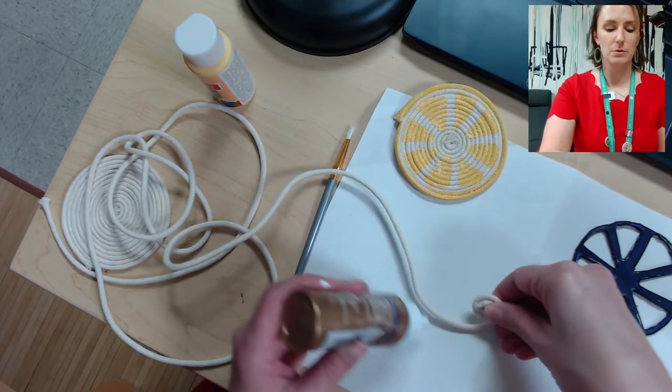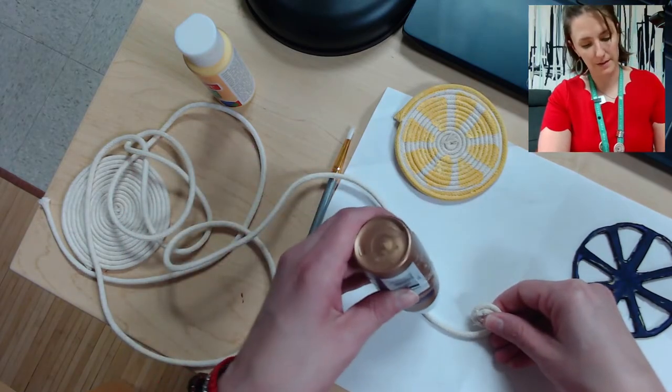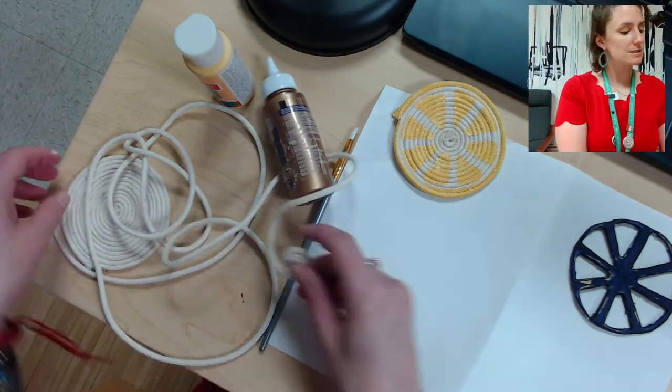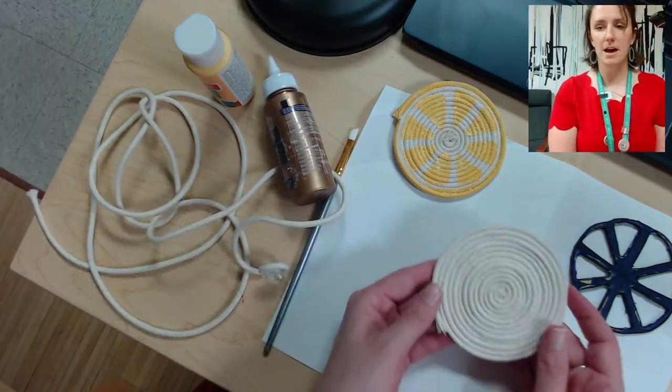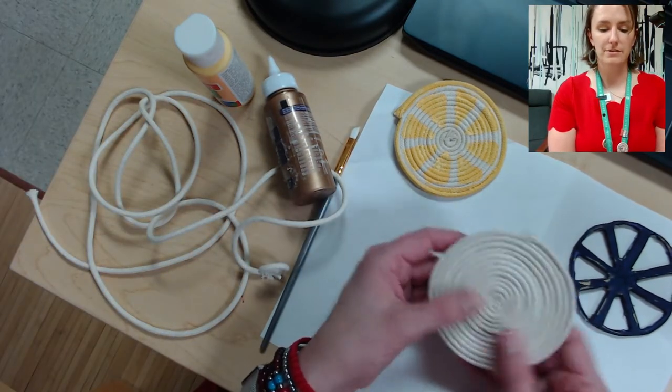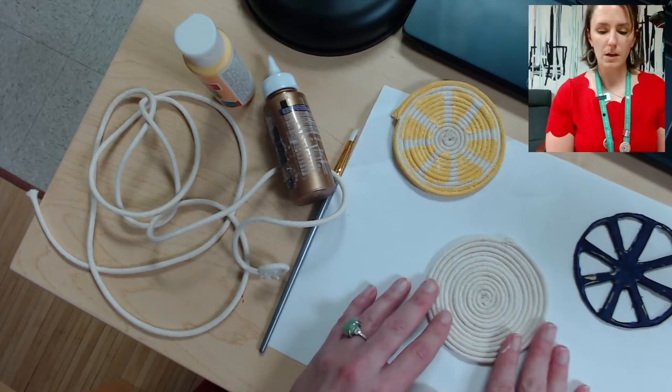Wrap it up until you run out of glue and then you glue some more and you keep going until you get all the way to the end and you have this nice flat surface of coiled rope.